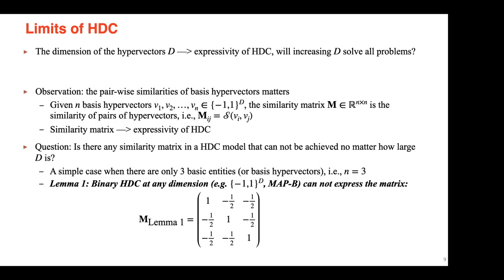A key question: is there a similarity matrix that no HDC model can achieve, regardless of dimension or sampling method? For the case of n=3 basis hypervectors, we have the following lemma: binary HDC at any dimension cannot achieve the similarity matrix where all pairs of different vectors have similarity of negative one-half. This is a remarkable result.